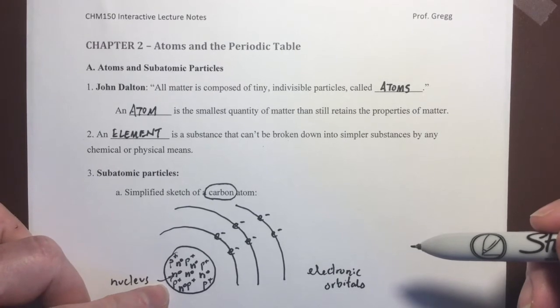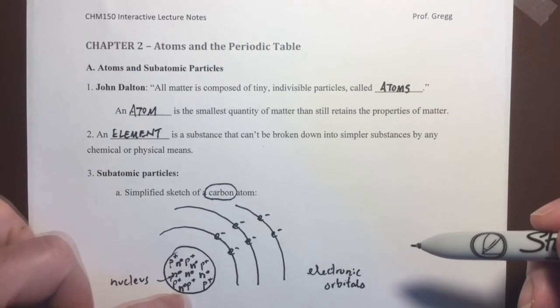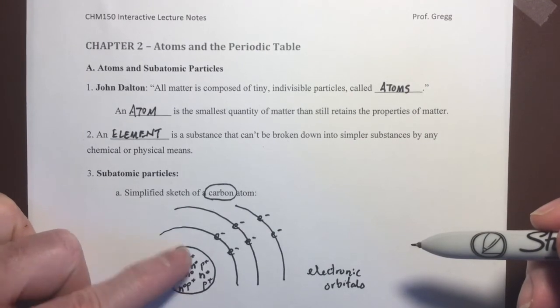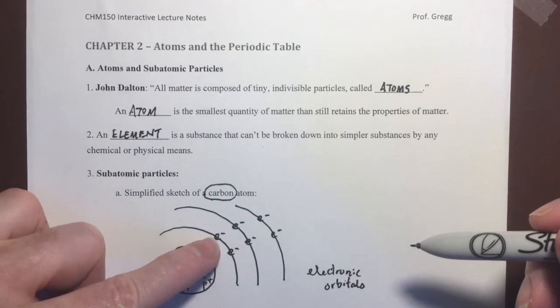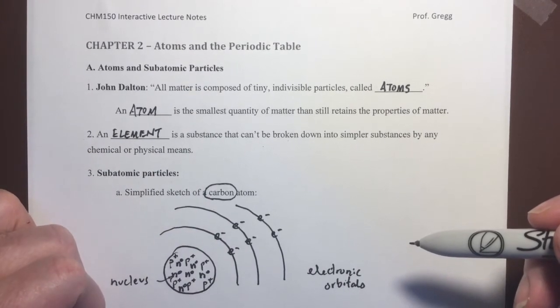And again, we're going to talk about why I've drawn them this way. But for now, I'm just going to draw them that way, and we'll use that as our simplified sketch. So, this is the most common isotope of a carbon atom. It's an isotope that has six neutrons in its nucleus, six protons, because all carbons have six protons. And if it's a neutral atom, it must have six electrons as well.